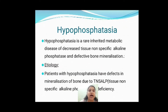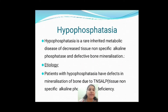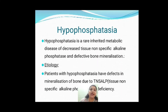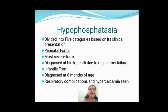Hypophosphatasia is a rare inherited metabolic disease of bone. There is going to be a problem with the enzyme alkaline phosphatase. As you know, alkaline phosphatase is an enzyme needed for mineralization of bone. This enzyme is coded by the TNSALP gene — tissue nonspecific alkaline phosphatase. Deficiency of this gene is going to hinder the mineralization of bone. There are five categories based on clinical presentation: perinatal, infantile, childhood, adult, and odonto hypophosphatasia.